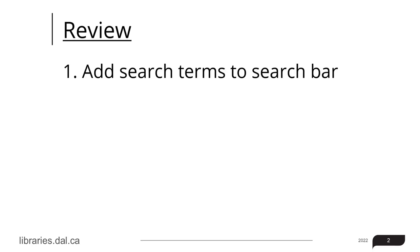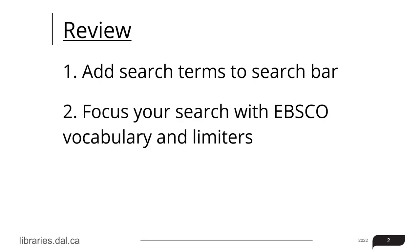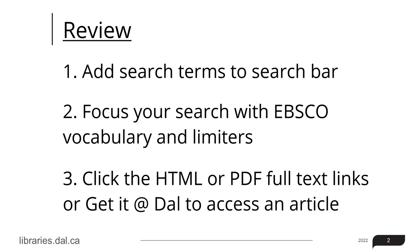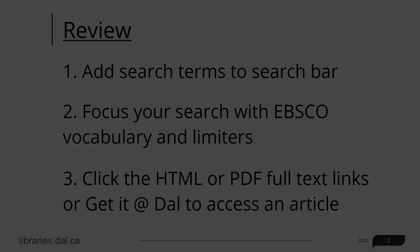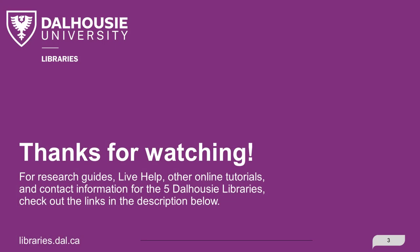Let's review some of the things we have covered in this video. First, start by adding your search terms into the search bar at the top of the page. Second, focus your search by using EBSCO's vocabulary or by limiting your publication types or date ranges. Third, click the HTML or PDF full text button to read the full article. If the full text is not linked, click the Get it at Dal button to access items that interest you. Thanks for watching. For research guides, live help, other online tutorials, and contact information for the five Dalhousie libraries, check out the links in the description below.